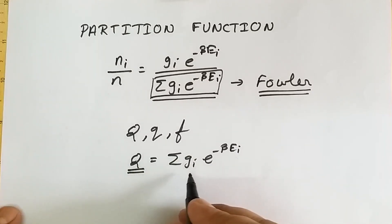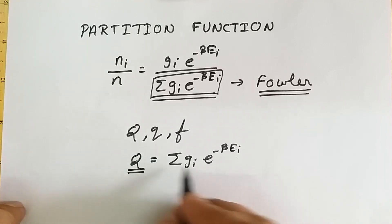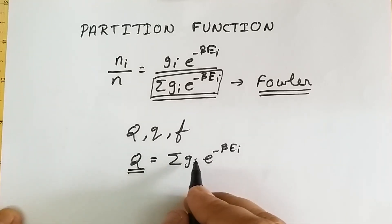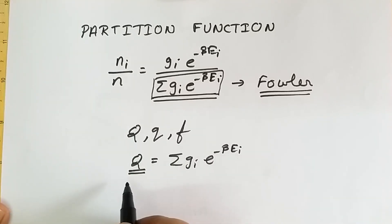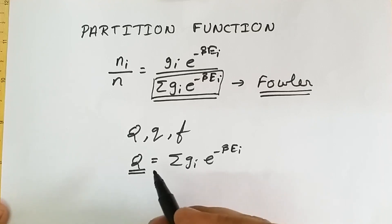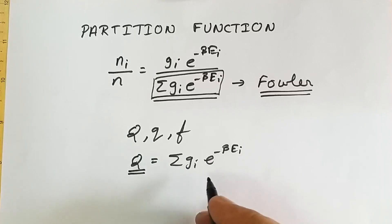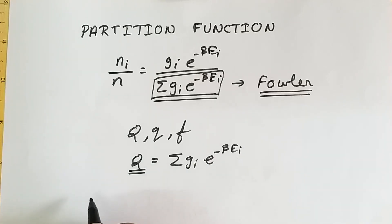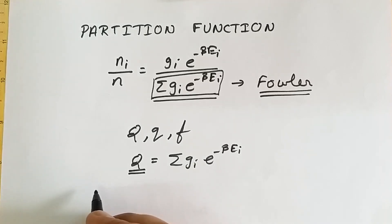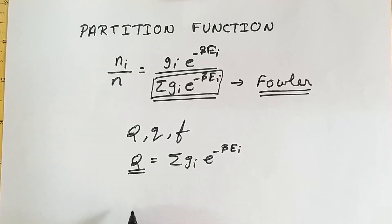The partition function also provides a link between the microscopic properties of individual molecules and the macroscopic properties of the whole system. The partition function can be defined as the sum of the probability factors of various energy levels.